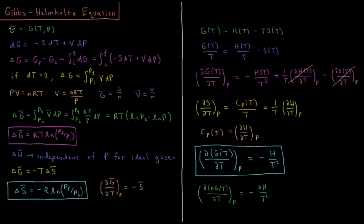The Gibbs energy can be defined as the internal energy minus TS plus PV. We can also define it as the enthalpy H minus TS, because the enthalpy is U plus PV. So for a given temperature, the Gibbs energy is equal to the enthalpy minus the temperature times the entropy.